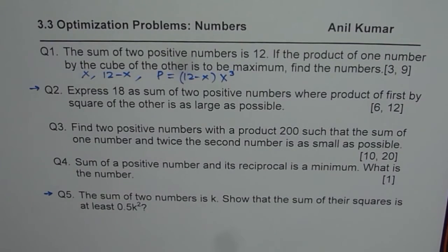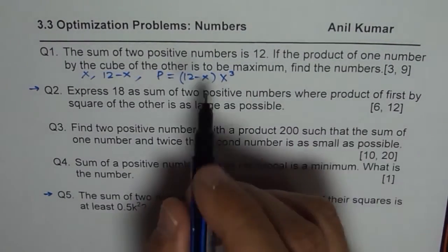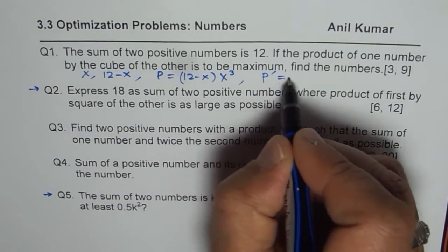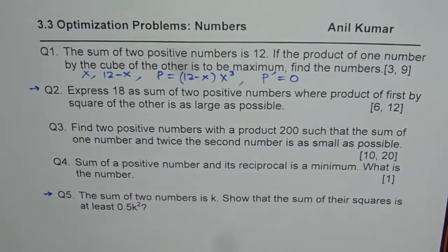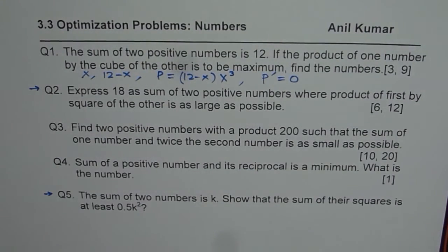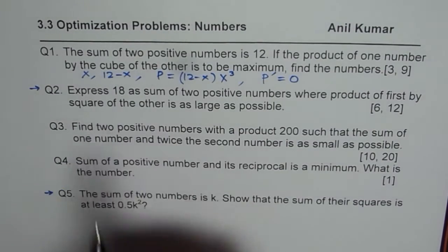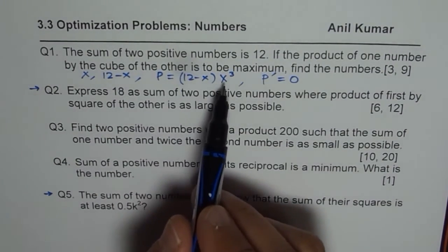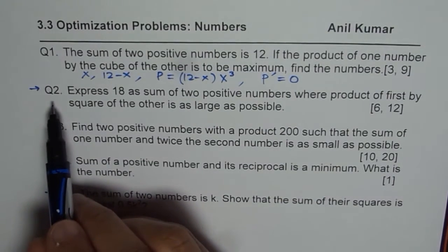This helps find the numbers. When you have to find the numbers, the next step is to find the derivative, equate it to 0, and get the numbers, which will be 3 and 9. So the two numbers are x and 12 − x. I hope you appreciate this strategy.